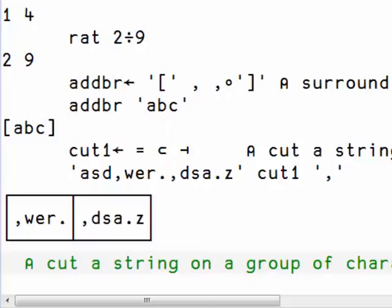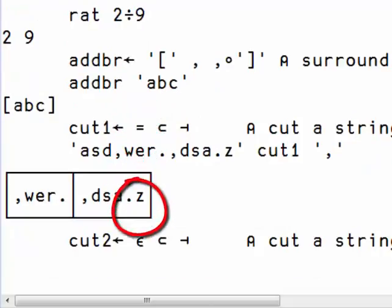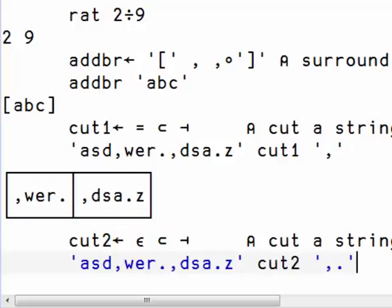Here we want to cut a string on a group of characters. We simply change the equal function by the membership function. So now we can cut on both comma and period.